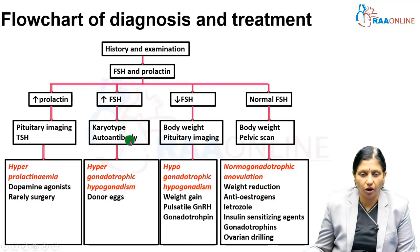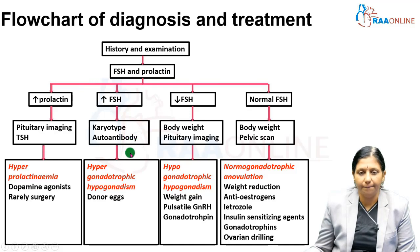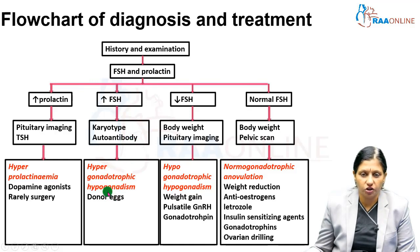If FSH is high, karyotype and auto-antibody titers are performed. If a karyotypic or genetic disorder is identified, these patients should be directed to donor oocyte treatment.